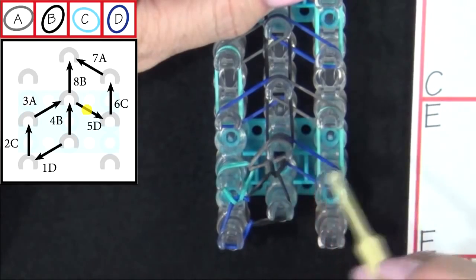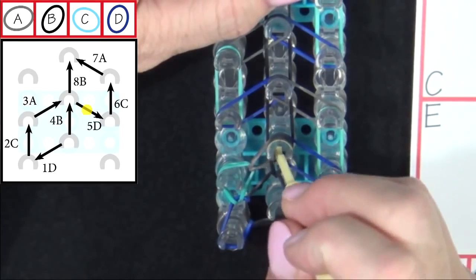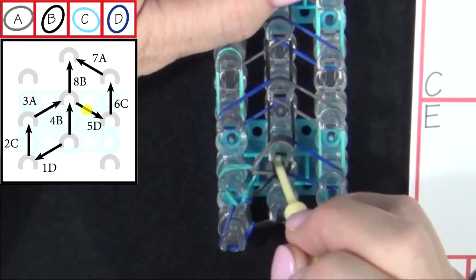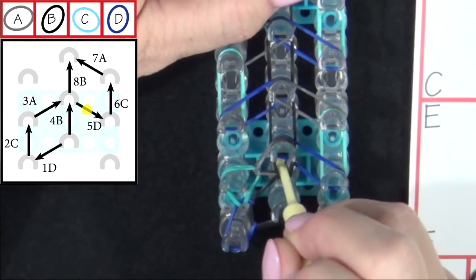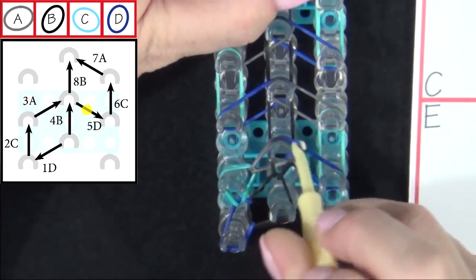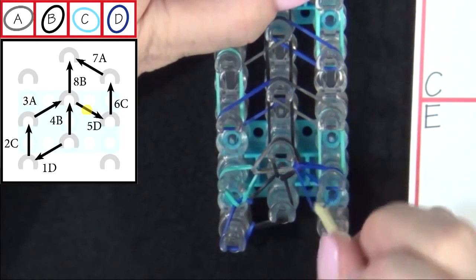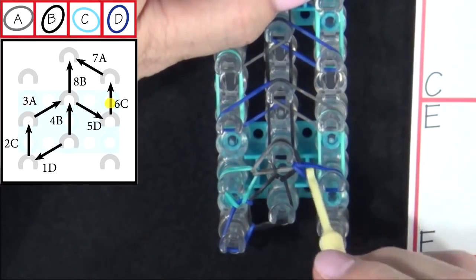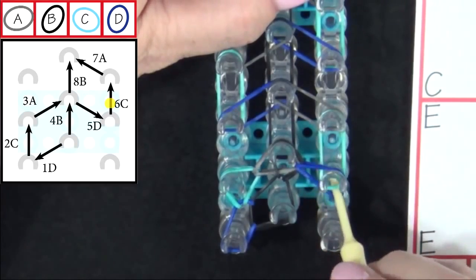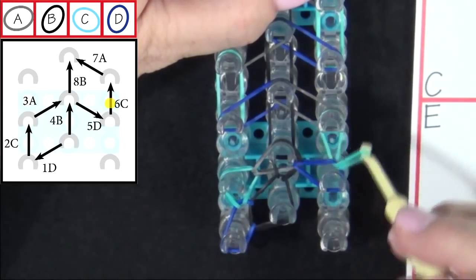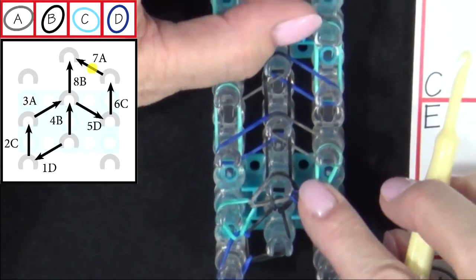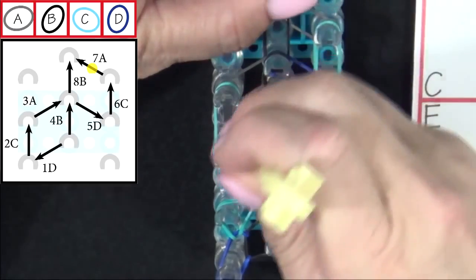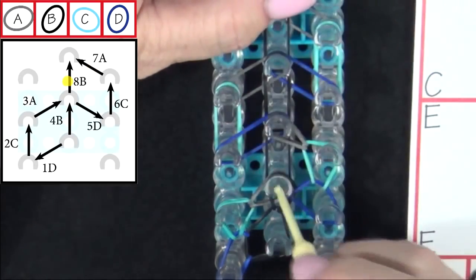5D will be looped out to the right. Reach into the center of that pin. Pull back all the bands above the D band. Grab the D band in your hook and then pull it out to the right. We'll loop band 6C next. Reach into the teardrop, pull that band back. Grab the C band and pull it forward. 7A will be looped to the center. And 8B will be looped forward.